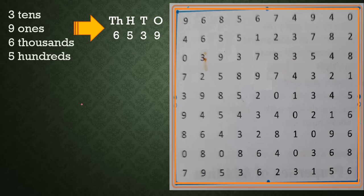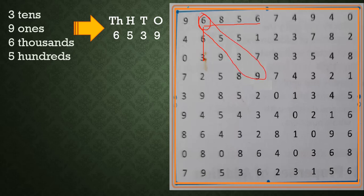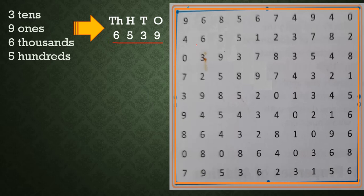After arranging all the jumbled place values, the formed number is six thousand five hundred thirty-nine — 6539. Now we search this number in the grid. We look for the starting digit 6 and search horizontally, vertically, and diagonally. Horizontally and vertically we don't find 6539, but searching diagonally we find the number. So we circle 6539 diagonally — that is the required first number.